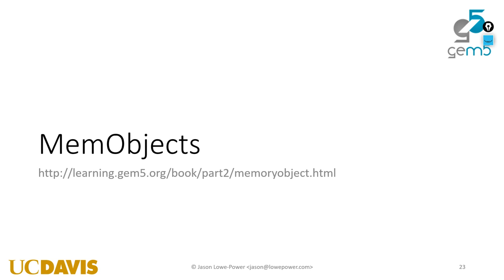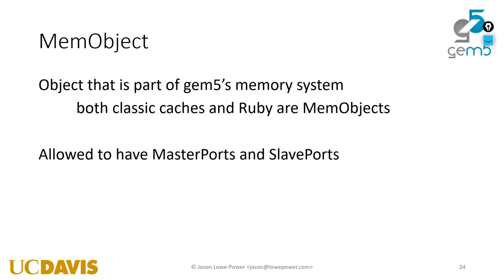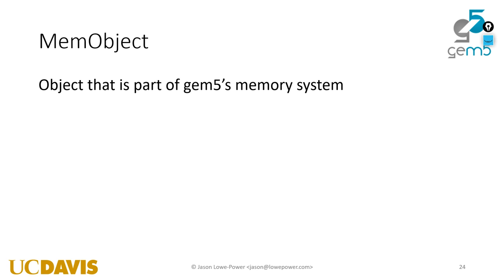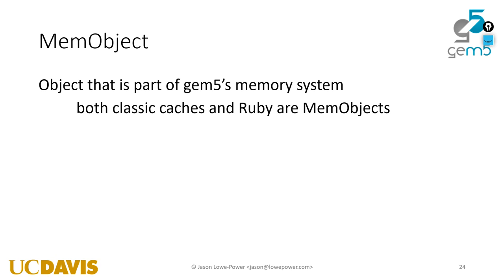Let's get excited about memory objects. Memory objects are one of the most important kinds of objects, one of the most important classes, which is a subclass of a sim object. These are objects that interact with the memory system. Caches are a memory object, the memory controller is a memory object, CPUs are a memory object because they have to send requests into the memory system.